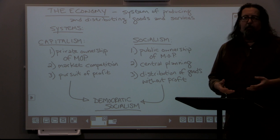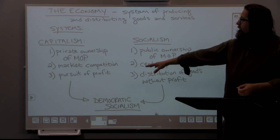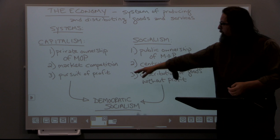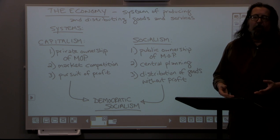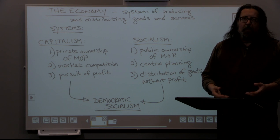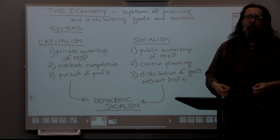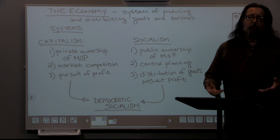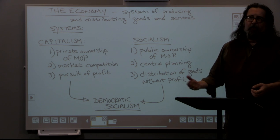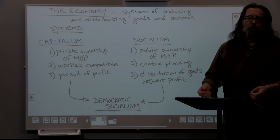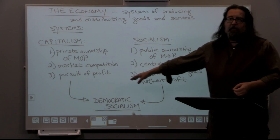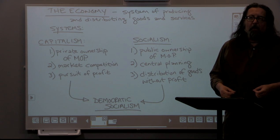The third characteristic is the pursuit of profit. Producers bring goods to market because they want to earn more than what it costs to produce something. If boots cost twenty dollars to make, I'm not going to sell them for ten dollars — I want to sell them for twenty-five dollars and make a five-dollar profit. If a competitor sells theirs for twenty dollars, I have to decide whether to match that price, knowing I'd make no profit at all. Profit means selling something for more than it cost to produce.